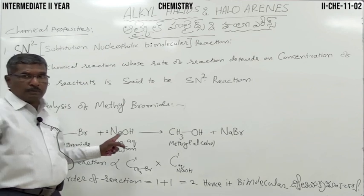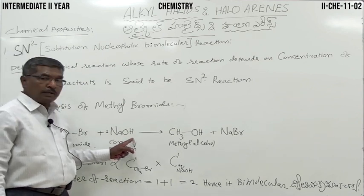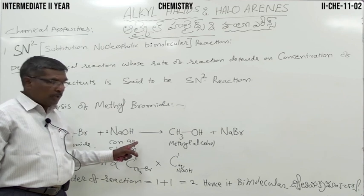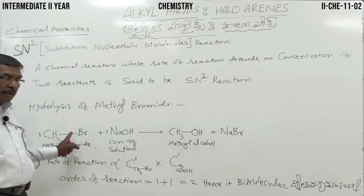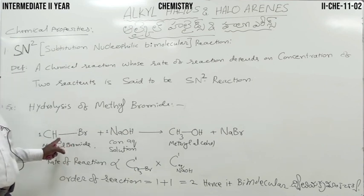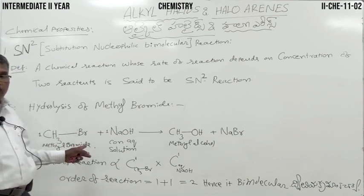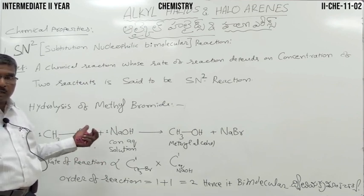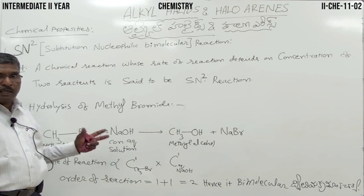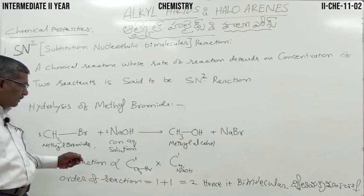Let us go to the mechanism of SN2 reaction. The best examples are methyl bromide, methyl chloride, and methyl iodide. Methyl iodide participates more easily in SN2 reaction than methyl bromide, and methyl bromide more easily than methyl chloride. Depending on the size of the halogen, the rate of reaction depends.